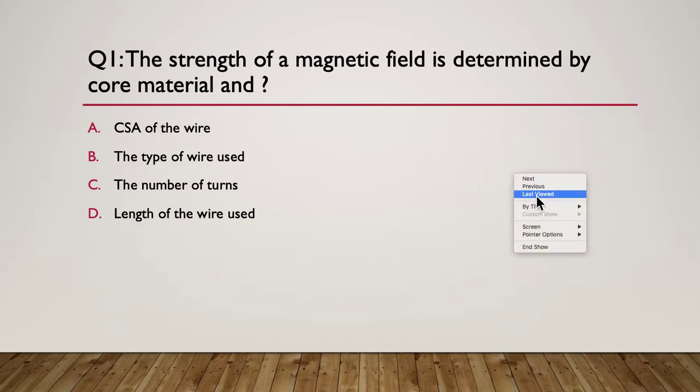So here's our first question. I'll just get my pointer turned on, ready to answer any questions that might pop up along the way. So question one, the strength of a magnetic field is determined by the core of the material. What's the other thing that determines the strength of a magnetic field? The cross-sectional area of the wire, the type of wire used, the number of turns used, or the length of the wire used. So pause here.